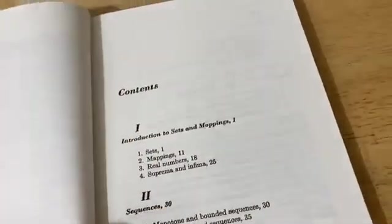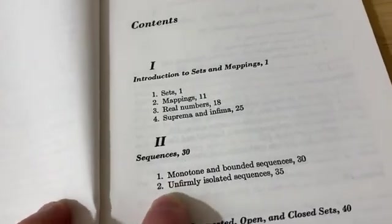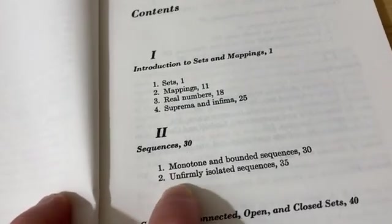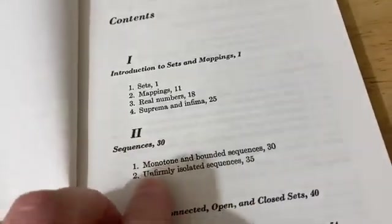Here's the preface, and you see that it's dated 1962. Something really interesting about this book is that there is a typo right here. Chapter 2 is on sequences, and Section 2 of Chapter 2 is supposed to say uniformly isolated sequences. There's a typo here.